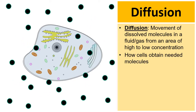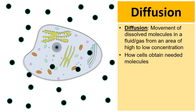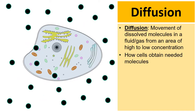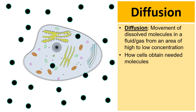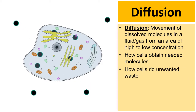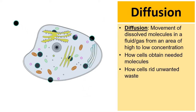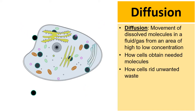This is how cells obtain their needed molecules. If these black circles represent a nutrient, they're diffusing from a high concentration on the outside to a low concentration on the inside. Diffusion is also how cells get rid of unwanted waste — if the black circles represent waste, they're diffusing from an area of high to low concentration.